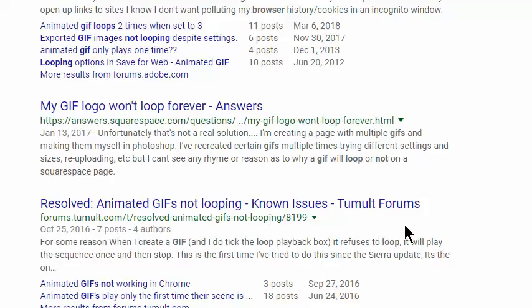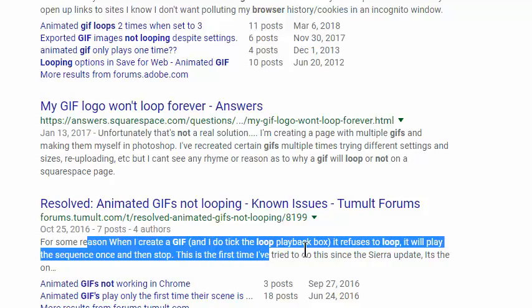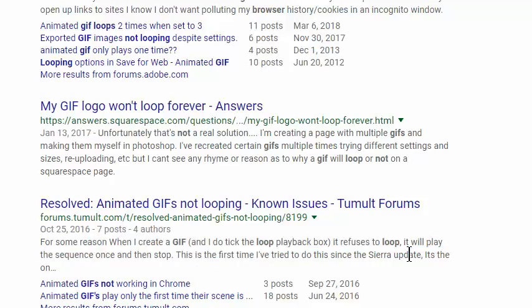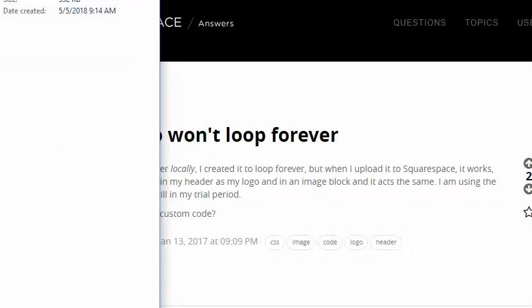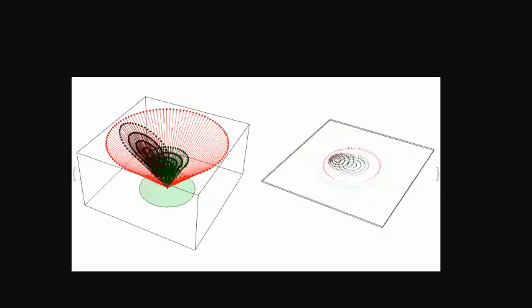Okay, I'm seeing a lot of people complaining about this. For some reason, when I create a GIF, it refuses to loop. It will play the sequence once and stop. And this person is saying my GIF logo won't loop forever. However, why is this a problem? Because if I am specifically opening the browser just to open a GIF, such as this one, I will hit enter so it refreshes. It's playing once, twice, and then it stops. Why would it stop?